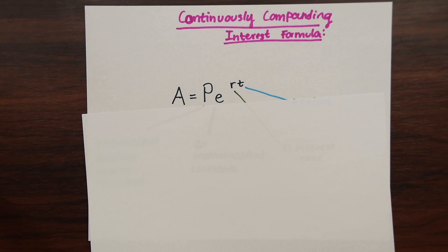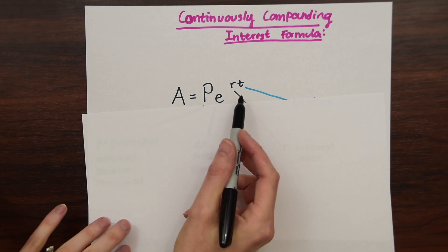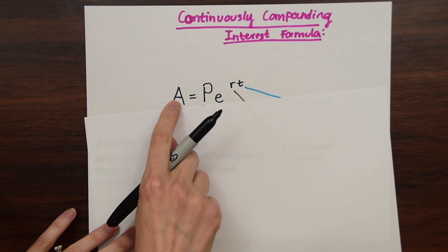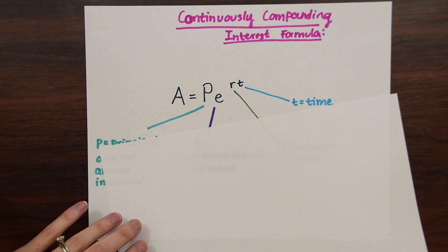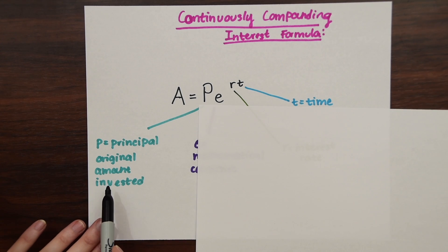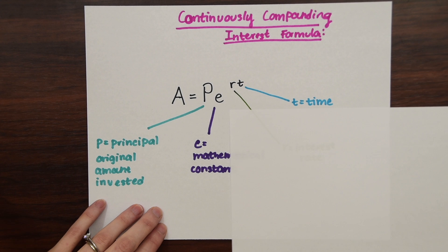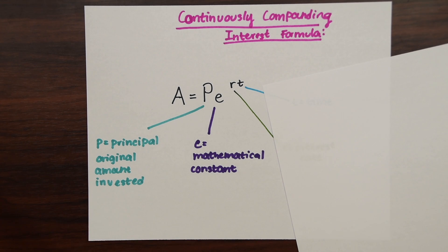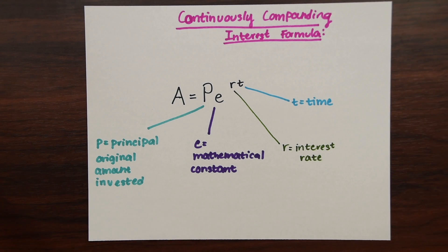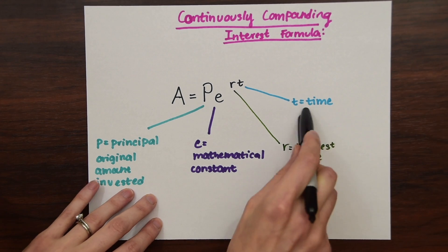So let's start looking at the formula. Our formula is A equals P times e raised to the rt. A is the amount that you earn after so many years. P is the principal — that original amount that you start with. e is a mathematical constant and we can find it easily on our calculator, so don't worry too much about that. r is the interest rate and t is for time, usually in years.